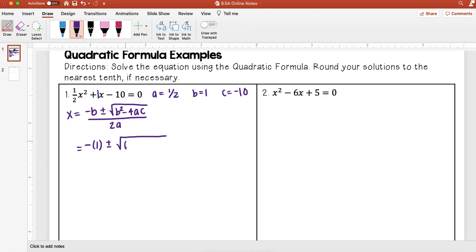b squared, so I have 1 squared minus 4 times a, which is one-half, times c, which is negative 10. All over 2a, which a is one-half.